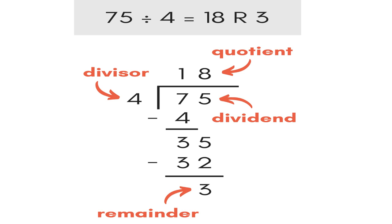4 into 7 goes 1. You put the 1 on top, and then multiply 1 times 4 is 4, and then you subtract 4 from 7, which is 3.